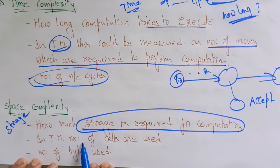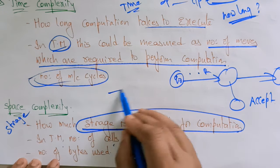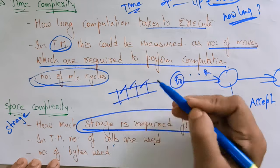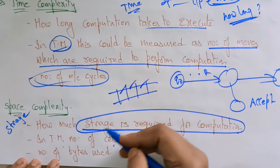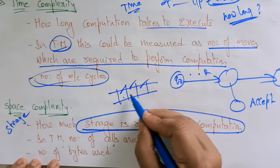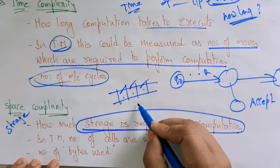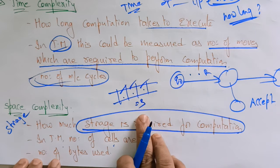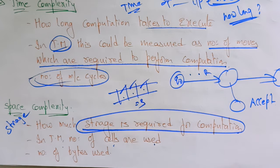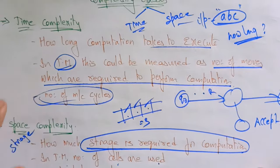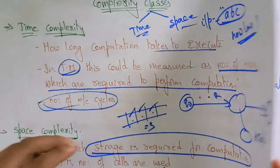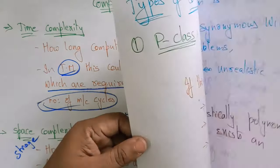In the Turing machine, the number of cells used on the tape determines the space complexity. Here we are using three cells on the tape, so the space complexity is three. That is the main concept of time complexity and space complexity.